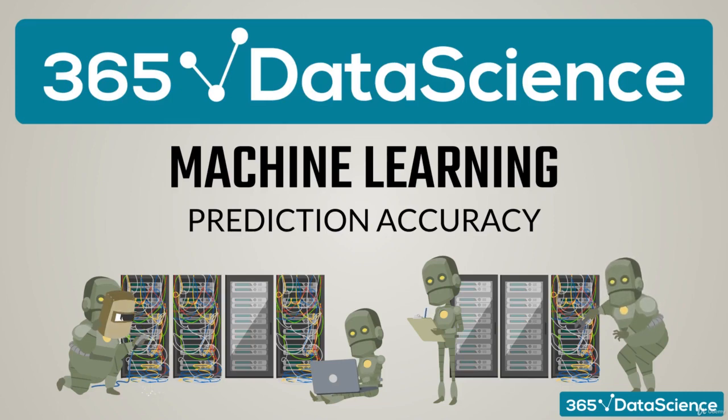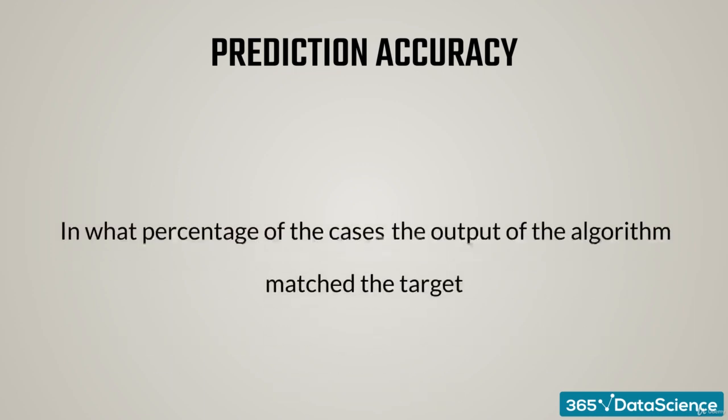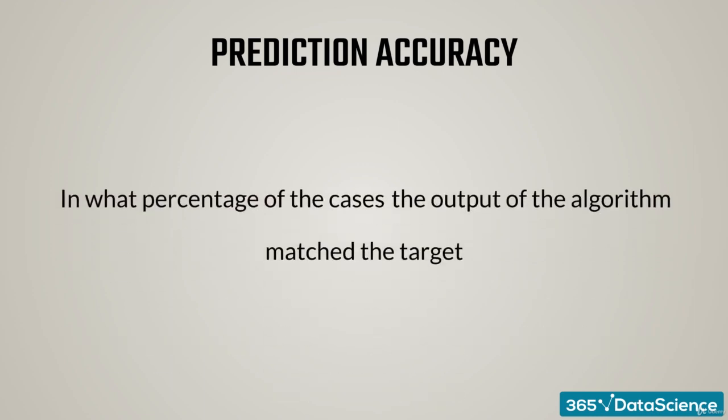Hey! In this lecture, we will introduce something we haven't discussed so far: Prediction accuracy. We just need two lines of code, which basically measures in what percentage of the cases the output of the algorithm matched the target.